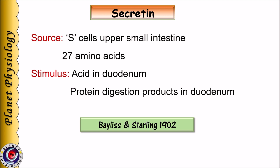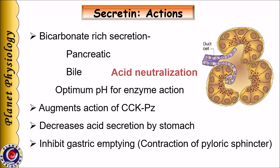Now let us study hormones of the secretin family. The first is secretin itself — it is the first hormone discovered, in 1902 by Bayliss and Starling. It is released by S cells of the upper small intestine in response to presence of acidic chyme as well as partially digested proteins in the duodenum, but acidic chyme is the most potent stimulus. It has 27 amino acids. The most important action of secretin is to release bicarbonate-rich secretion from the pancreas as well as bile, necessary to neutralize acids entering the duodenum and to provide optimum pH for enzyme action. Secretin also augments the action of CCK-PZ, decreases acid secretion by the stomach, and inhibits gastric emptying by causing contraction of the pyloric sphincter, ensuring chyme is released in a controlled manner that can be effectively handled by the duodenum.